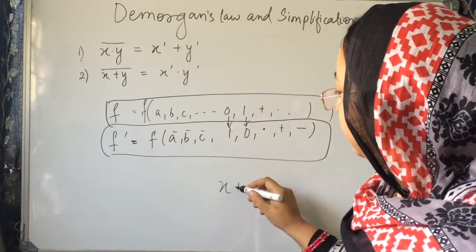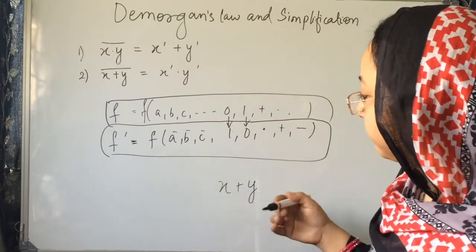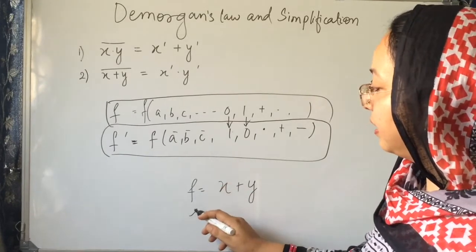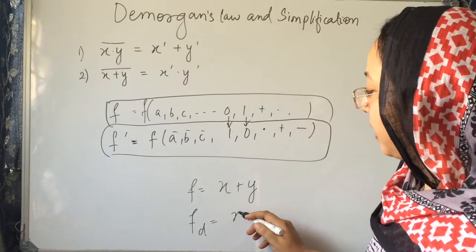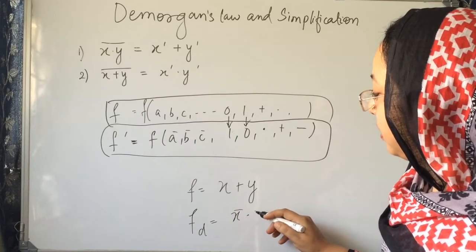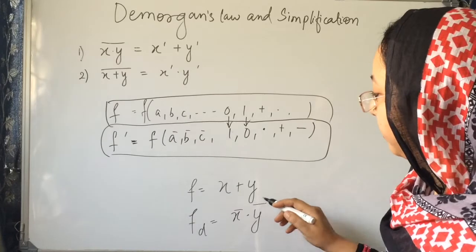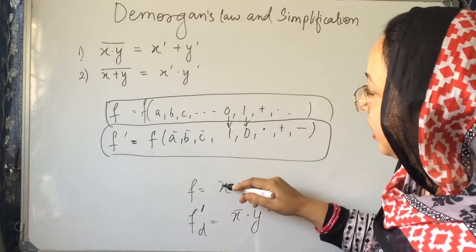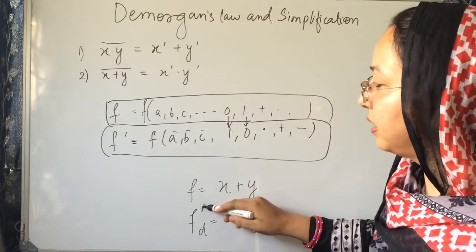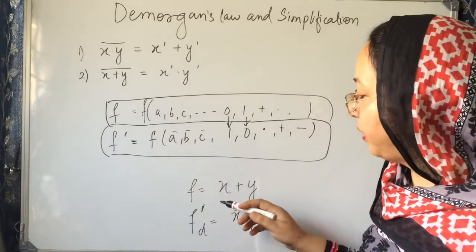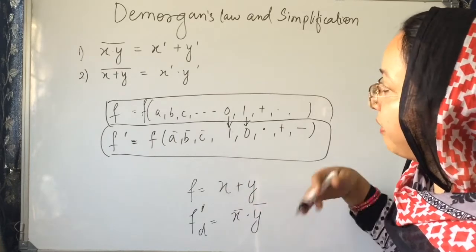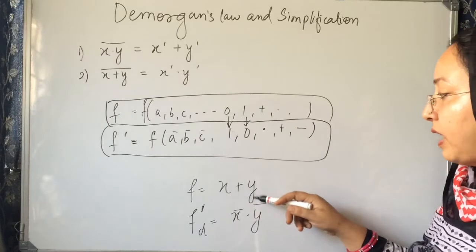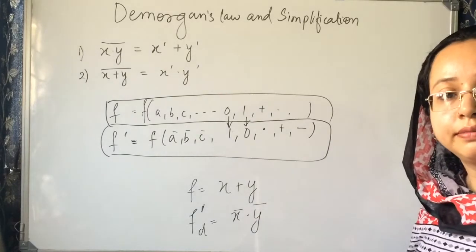For example, x plus y — its dual function will be: if the function is written as x plus y, then its dual function is found by complementing it. Using De Morgan's Law, dual is nothing but the complement. When we complement x plus y by putting a bar over it, x plus y bar becomes x dash dot y bar. That's why x has changed to x dash, y has changed to y dash, and plus has changed to dot. That is known as dual function.